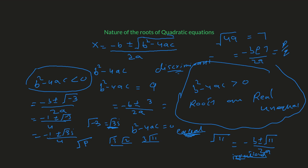To summarize the four conclusions: if the discriminant is positive, the roots are real and unequal. If the discriminant is negative (less than zero), the roots are complex or imaginary and unequal. If the discriminant equals zero, the roots are equal and real. And if the discriminant is a perfect square, the roots are rational; if it is not a perfect square, the roots are irrational.